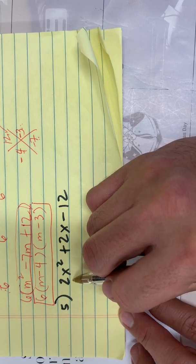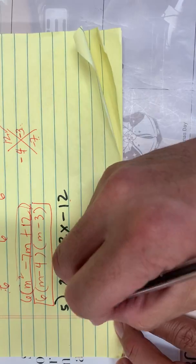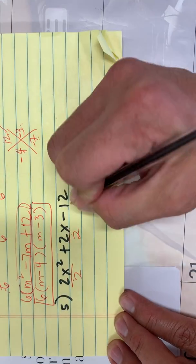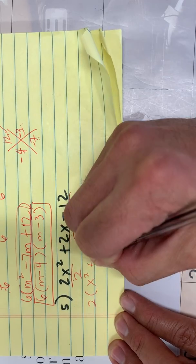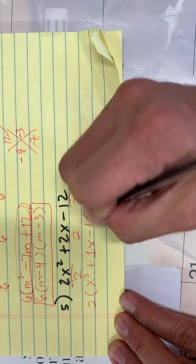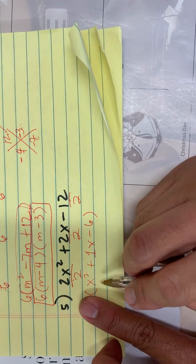And last one here, 2X squared, 2X minus 12. They're both divisible by 2, so I'm going to divide them all by 2. X squared plus 1X minus 6. And now you can focus on your trinomial.